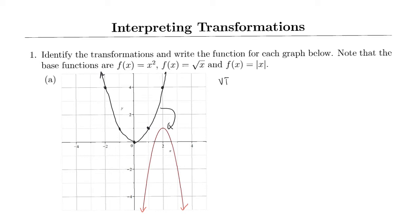There's been a vertical reflection over the x-axis, which means I replaced y with negative y. So instead of y equals x squared, I made that negative y equals x squared, and I can bring that negative over — it becomes negative x squared. So that's where I'm at thus far.